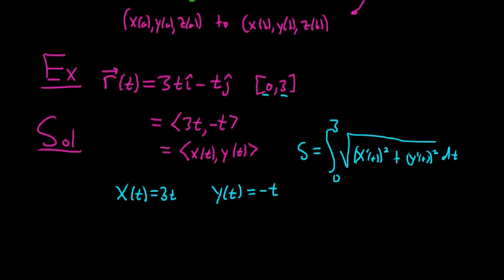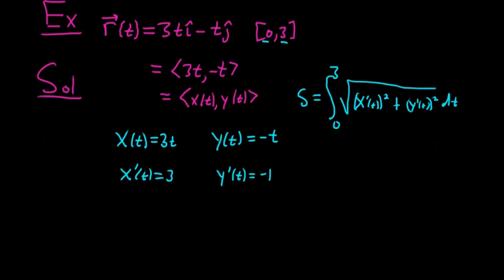So x prime is just the derivative of 3t, which is simply 3. y prime is just the derivative of negative t, which is simply negative 1. That's pretty easy. So all we have to do now is plug it into our formula. So little s is equal to the definite integral from 0 to 3 of the square root of 3 squared plus negative 1 quantity squared, dt.